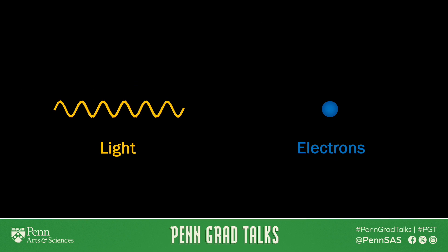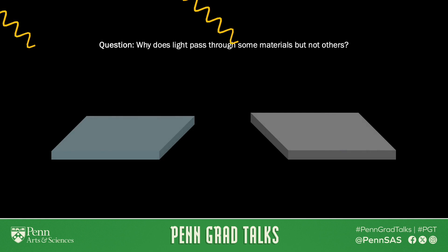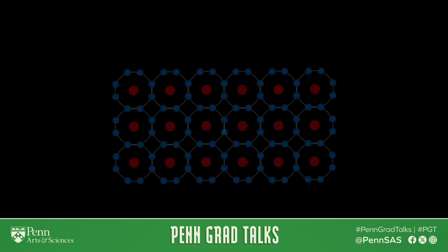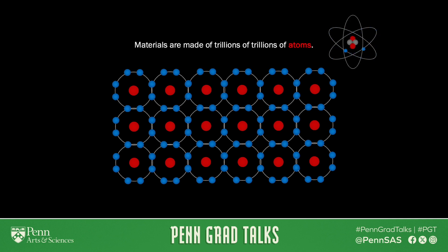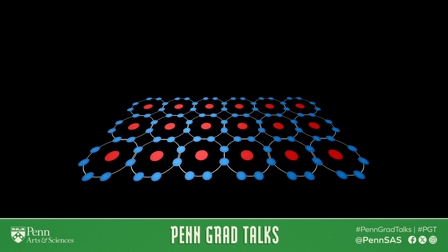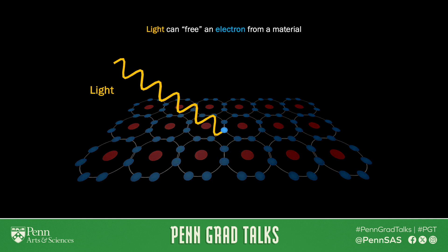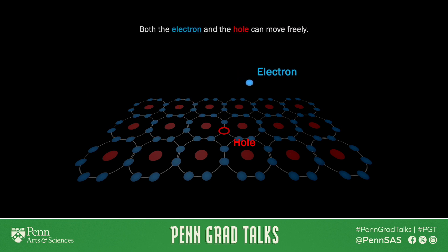It's amazing how many questions you can answer just in terms of these two objects. Have you ever wondered why light passes through some materials but seems to bounce off and reflect off of others? Something like glass versus something like a metal? All materials are made of trillions of trillions of atoms. What light can do is it can free an electron from a material, leaving behind an empty space that we call a hole. The electron is now free to move around, but so is the hole.